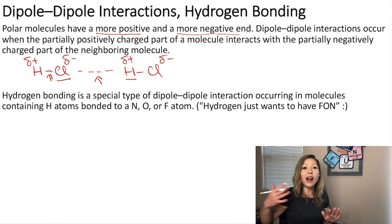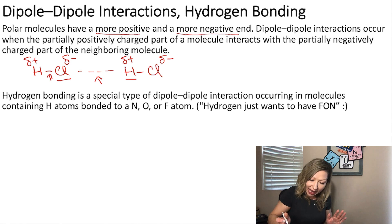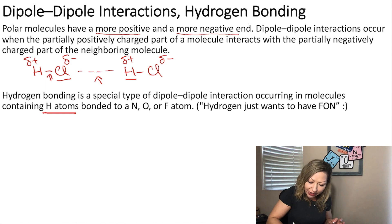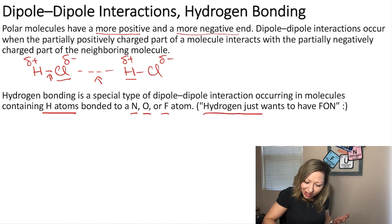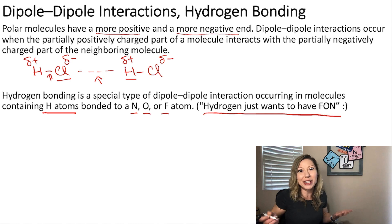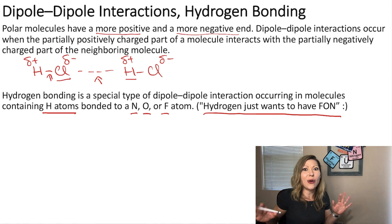There are even stronger dipole-dipole interactions called hydrogen bonding. This is a special type of interaction in which the molecule contains a hydrogen atom bonded to either a nitrogen, oxygen, or fluorine atom. The easiest way to remember this is: hydrogen just wants to have FON — fluorine, oxygen, nitrogen. Don't mix it up with U, because that's uranium, and there is definitely no hydrogen bonding involving uranium.